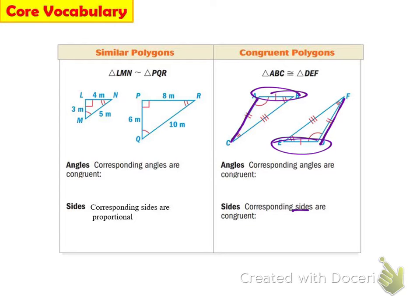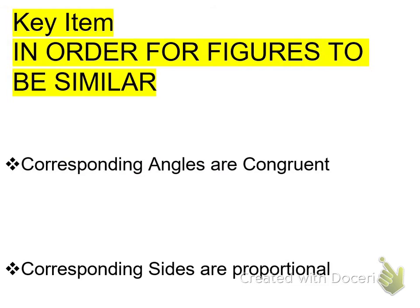Later, you're going to be asked: are the two figures similar? In order for them to be similar, you can fill this in — the corresponding angles are congruent and the corresponding sides are proportional. There's a blank at the bottom, and you're going to highlight all of it. In order for figures to be similar, the corresponding angles are congruent and the corresponding sides are proportional.